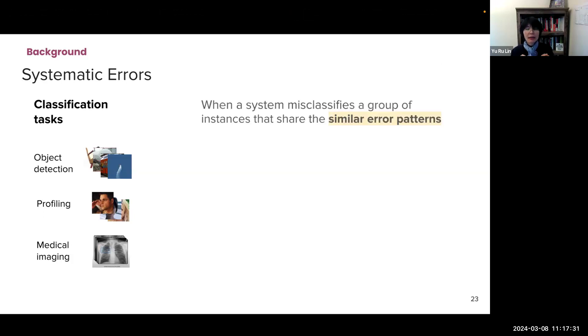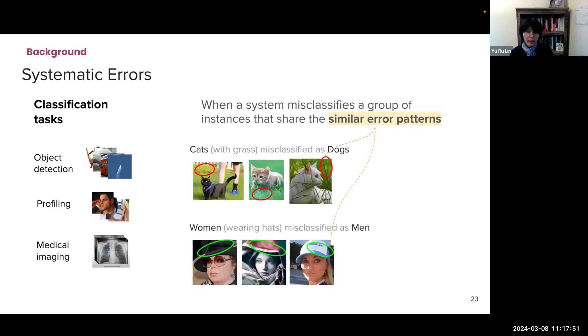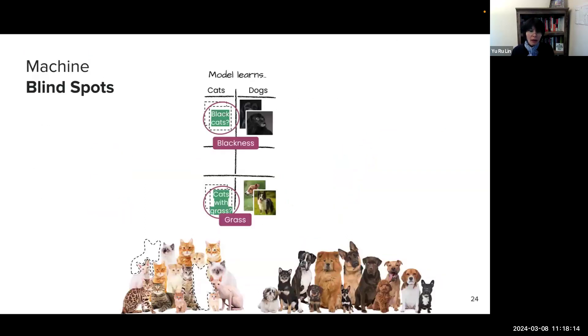The most concerning is the systematic errors. It occurs when the system misclassifies a group of instances that share similar error patterns, which means the system repeats the error over and over. For example, pets with grass repeatedly misclassified as dogs, and women wearing hats repeatedly misclassified as men. So the system is not aware of such errors and doesn't know the errors occur over and over.